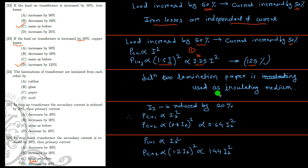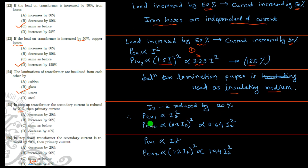The laminations of the transformer are insulated from each other. The insulating medium can be rubber, glass, or steel, but paper is the best insulating material used to insulate the iron core in the transformer.